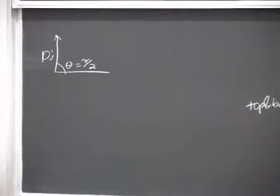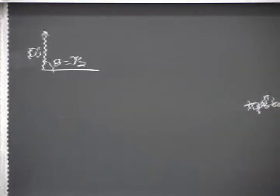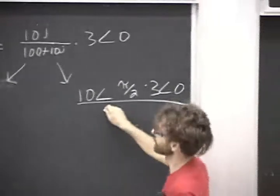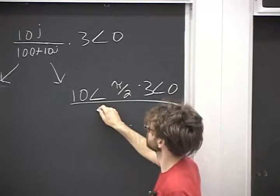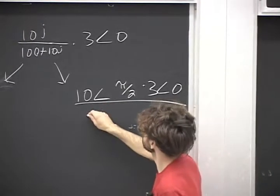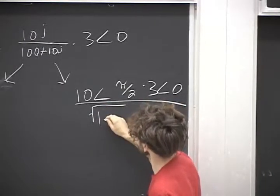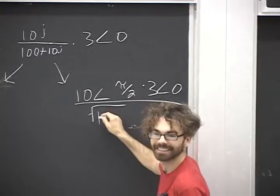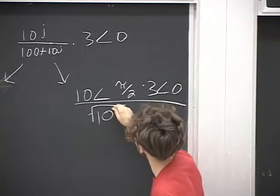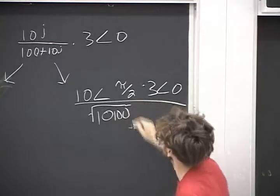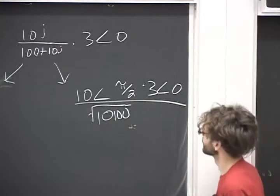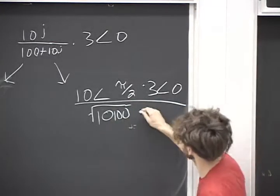So there's times pi over 2 times 3 angle 0, all over, what's the magnitude? Did what? Yeah. 10,100. Okay. And the angle is? Okay, a tan of what?